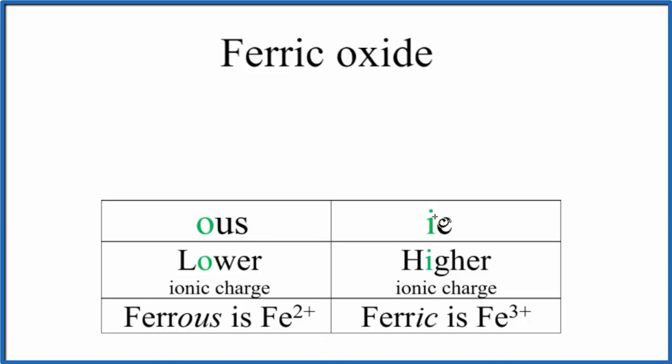So we have Fe3+ for ferric. Oxygen will always have a 2- ionic charge, and the whole thing needs to add up to zero. We need to have a net charge of zero because this is not an ion.